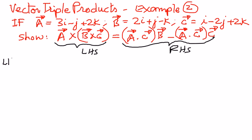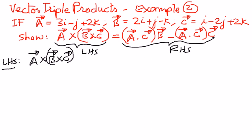We start with the left-hand side. We want to compute vector a cross (vector b cross vector c). We will use matrices to find vector b cross vector c, writing out i, j, k in the first row, and then picking the coefficients of i, j, and k from vectors b and c.